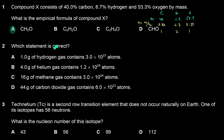Which statement is correct? One gram of hydrogen gas contains 3×10²³ atoms. If you look at hydrogen, it has an MR of 2 grams per mole, so if I have 1 gram, the number of moles is 0.5 moles of H₂ gas.